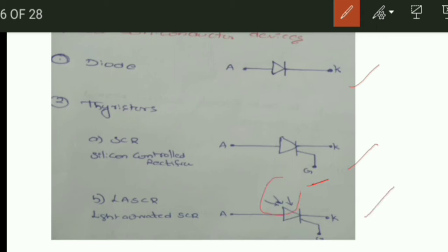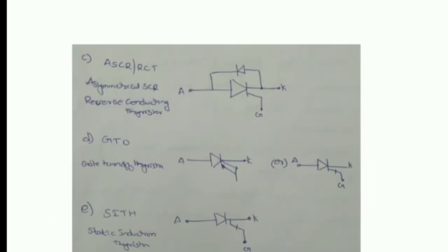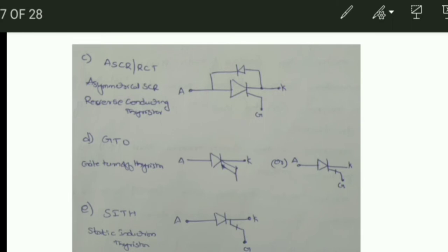In the Light Activated SCR symbol, you can observe the light symbol as well. Next is the ASCR or RCT — Asymmetrical SCR or Reverse Conducting Thyristor — which has anode, cathode, and gate. In addition to the thyristor, one diode is connected antiparallel, which makes it the ASCR or RCT.